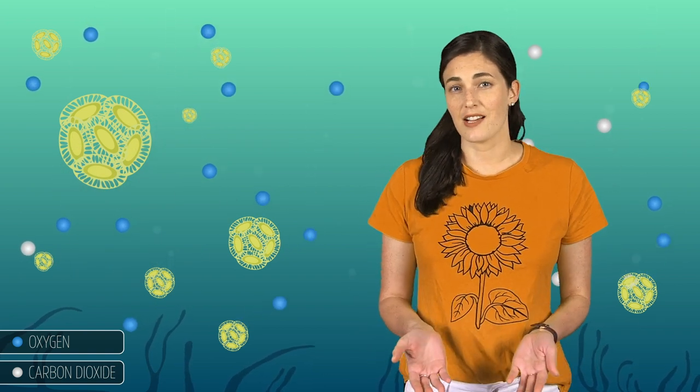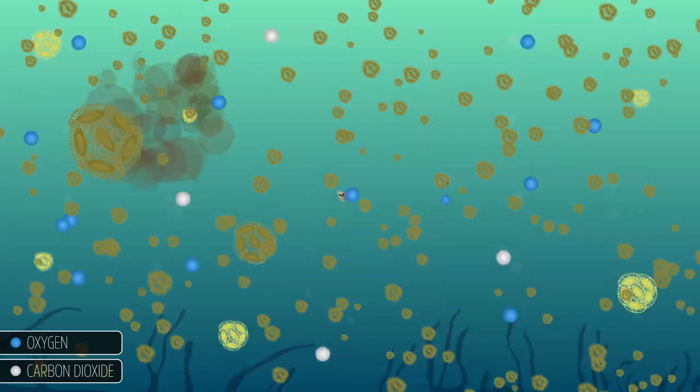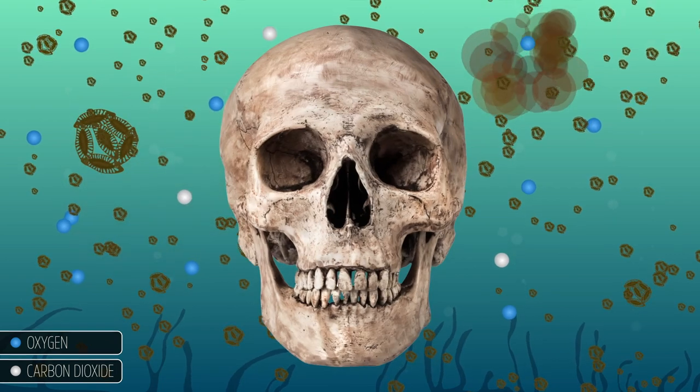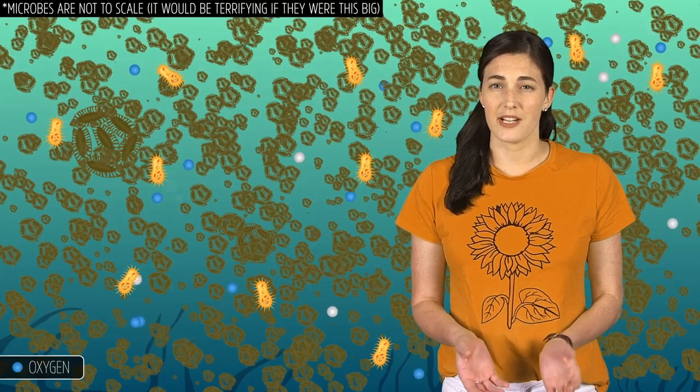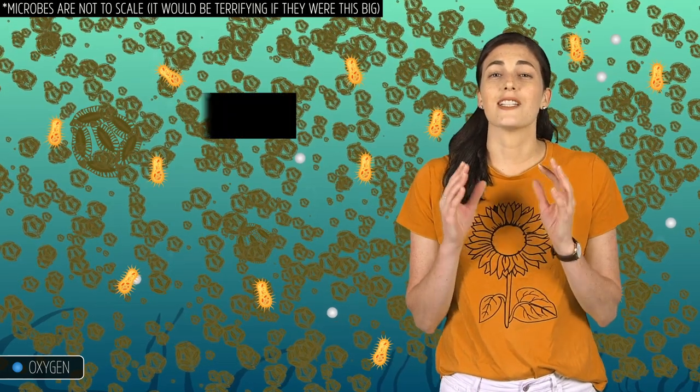But the issue with just dumping iron is its potential side effects, like an algal bloom, which happens when phytoplankton grow out of control and then begin to die. When that happens, the microbes that feed on phytoplankton debris begin to suck up so much oxygen from the water that they create what's called a dead zone, and other critters in those waters begin to suffocate.